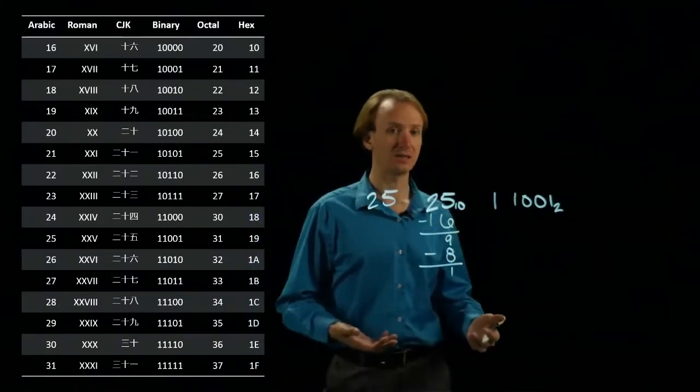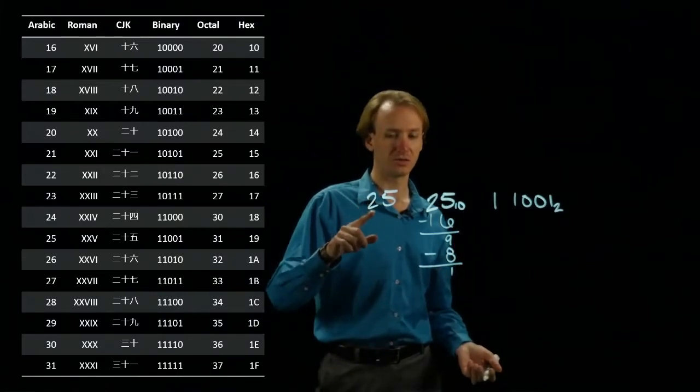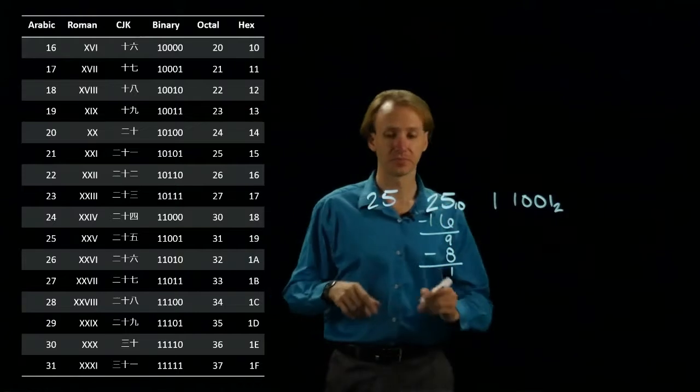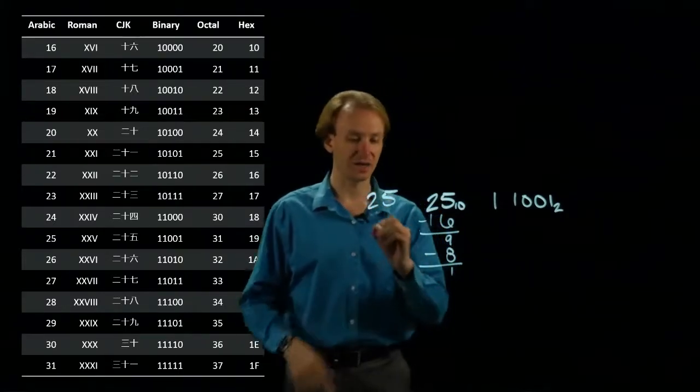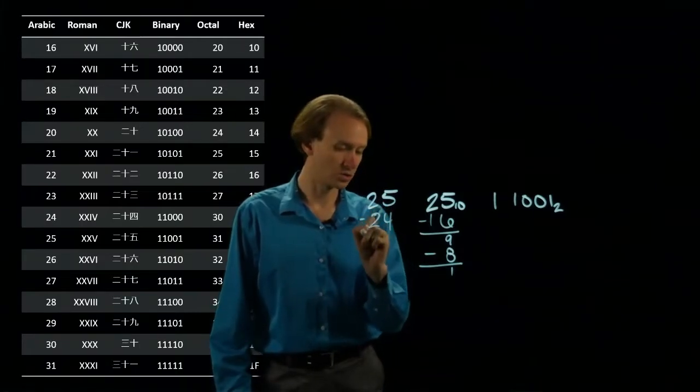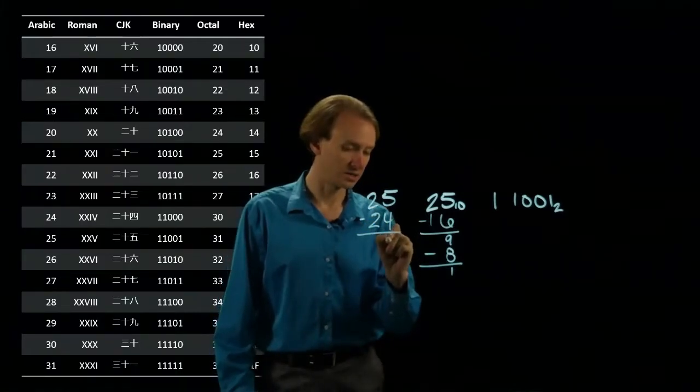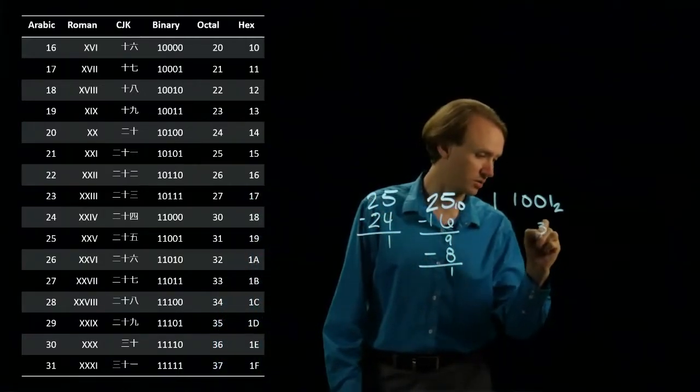I've got 1, 8, and 64. So I know I don't have any 64s in here, but I do have some 8s. How many 8s? It looks like I can get 3 eights out of here. 3 times 8 is 24. So I'll subtract that, and I'll get 1. So the first digit in my octal number will be 3.